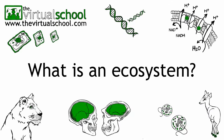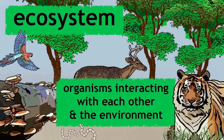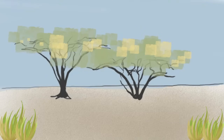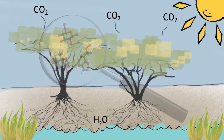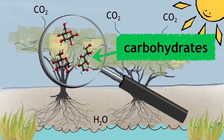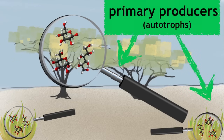An ecosystem is a community of living organisms interacting with each other and the environment around them. Ecosystems are built from plants upwards as they harness CO2 and water, and using the sun's energy, plants create energy-containing molecules which are carbohydrates. This is why they are often referred to as primary producers or autotrophs within the ecosystem.